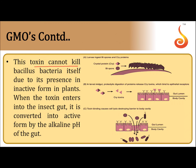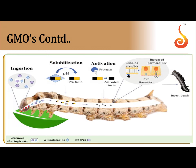Protoxin cannot kill Bacillus thuringiensis bacteria because it is present in an inactive form. When the protoxin enters into the insect's small intestine or midgut, it is converted into an active form by the high alkaline pH of the gut.